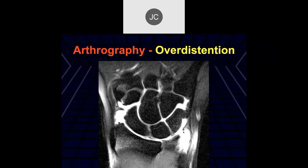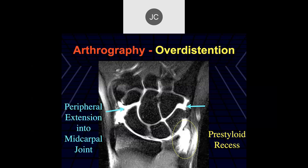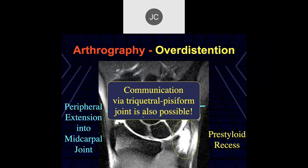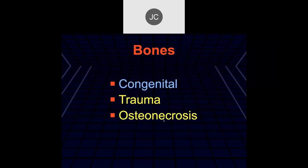With arthrography, you've got to worry about overdistension, where you can kind of blow out contrast — for example, extension of contrast into the pre-styloid recess. With overdistension, you can also force contrast into the middle carpal compartment even though you do not have a scapholunate ligament tear. Overdistension can be a cause of false positives. You can also communicate by forcing contrast through the pisiform-triquetral joint space and into the middle carpal joint space.